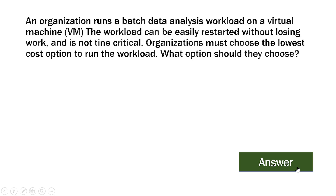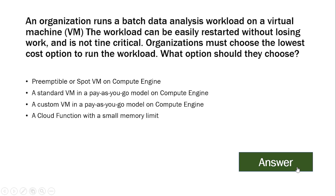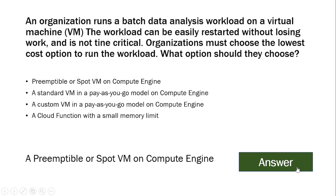An organization runs a batch data analysis workload on a virtual machine. The workload can be easily restarted without losing work and it is not time critical. The organization must choose the lowest cost option to run the workload. What option should they use? The options are Preemptible or Spot VM on Compute Engine, Standard VM in pay-as-you-go model on Compute Engine, a custom VM in a pay-as-you-go model on Compute Engine, or a Cloud Function with a small memory limit. The answer is Preemptible or Spot VM on Compute Engine — this is the cheapest option.